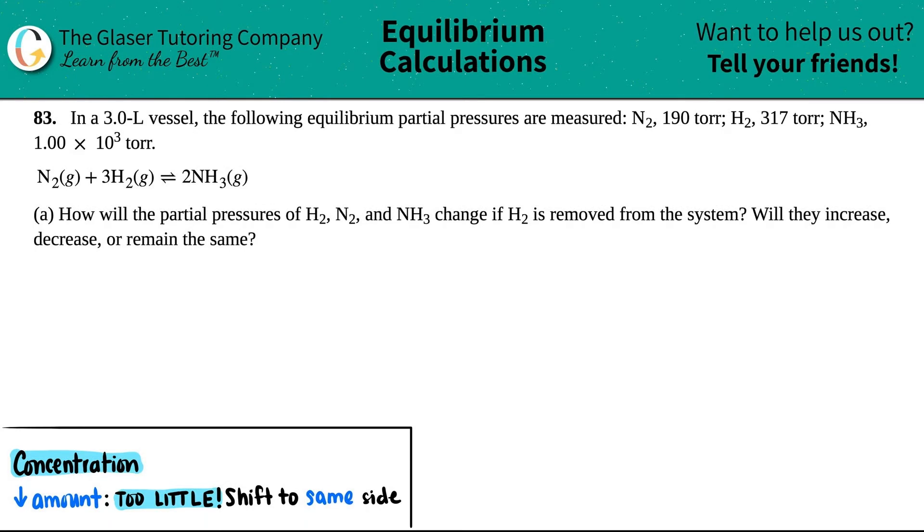Number 83. In a 3.0 liter vessel, the following equilibrium partial pressures are measured. N2 has 190 torr, H2 has 317 torr, and NH3 has 1.00 times 10 to the third torr. Then they give us this equation.